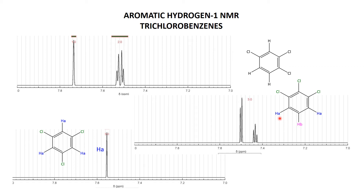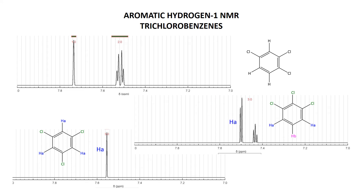So we'd expect a two-hydrogen doublet for HA, and HB has two adjacent hydrogens, so we'd expect a one-hydrogen triplet for HB. We want a doublet and a triplet, and the associated spectrum shows exactly that: there's the doublet, there's the triplet. HA, giving rise to the doublet, is close to the chlorines, so it's shifted further downfield — more deshielded. The HA peak is quite a bit higher than the HB peak, two to one.